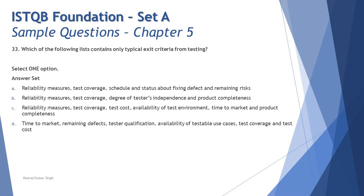Option B includes reliability measures, test coverage, and degree of testers' independence. The degree of testers' independence is more of an entry criteria - before starting a process you measure how independent your testing team will be, what coordination, communication, and documentation is needed. Option C includes reliability measures, test coverage, test cost, and availability of the test environment - which makes it entry criteria, because availability of the test environment defines when to start test executions.